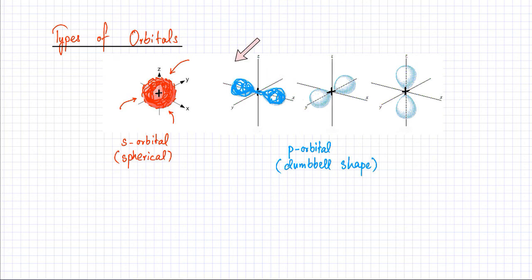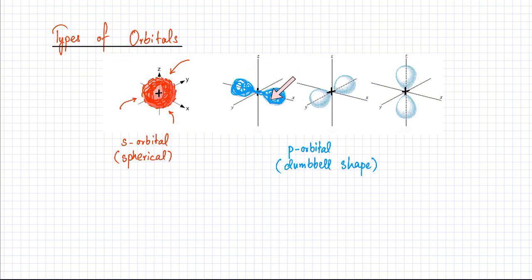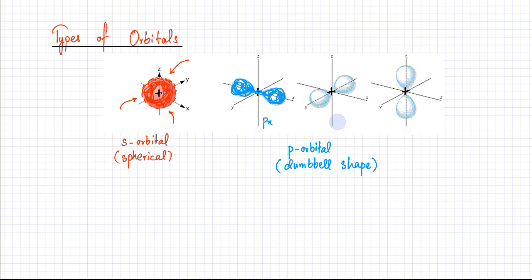To an outside observer, the electron appears to be everywhere in these two lobes. If you try to stick your hand into this region, you would experience an electron. One important point is that a p orbital is directional. There are three types of p orbitals: if it's lying on the x-axis it's called a px orbital, on the y-axis it's a py orbital, and on the z-axis it's a pz orbital.